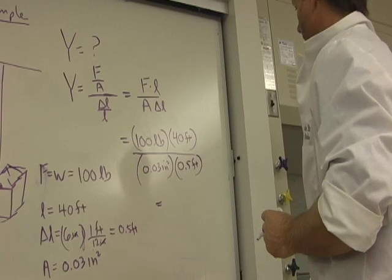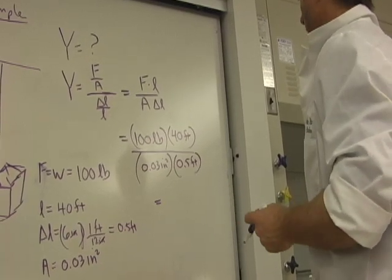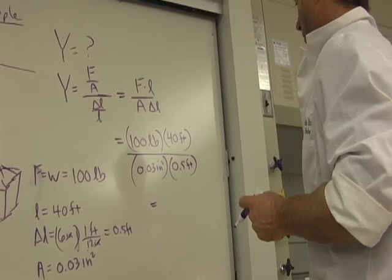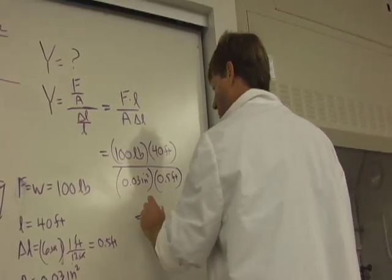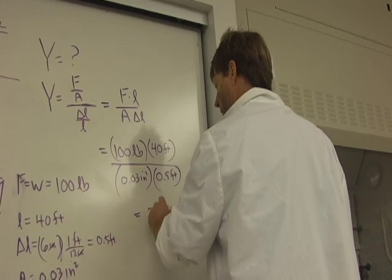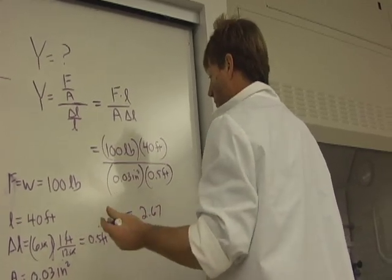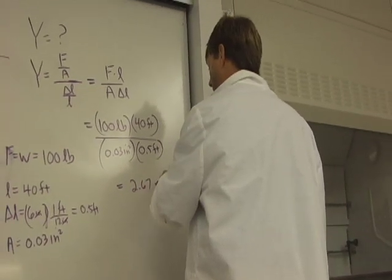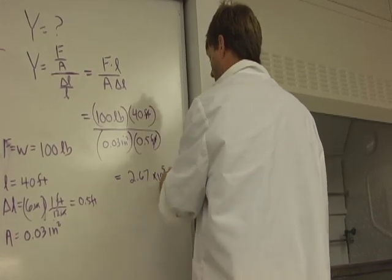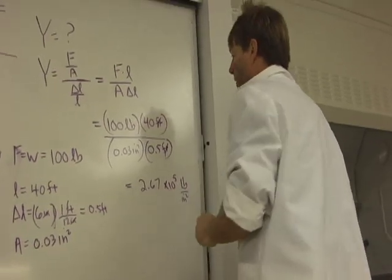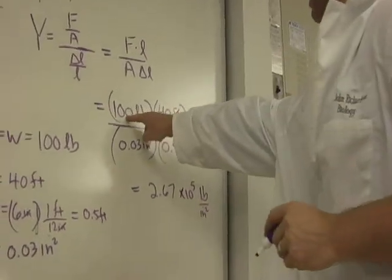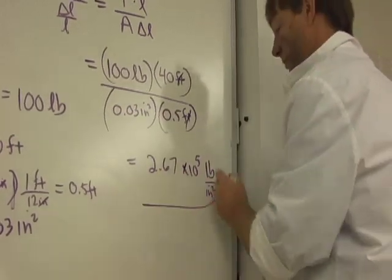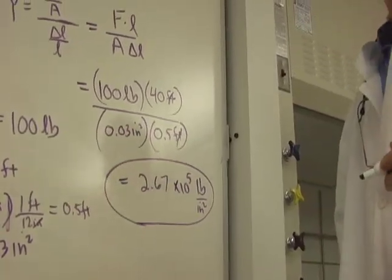So that's going to be 8,000 over 0.03, which is 2.67 - 8 to 3, or 3 to the minus 2. I think it's 2.67 times 10 to the fifth pounds per square inch. 8 times 10 to the 3 over 3 times 10 to the minus 2 is 20. Yeah. So that would be the Young's modulus for that material.